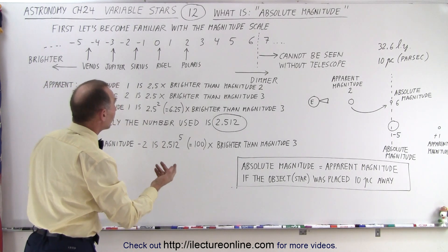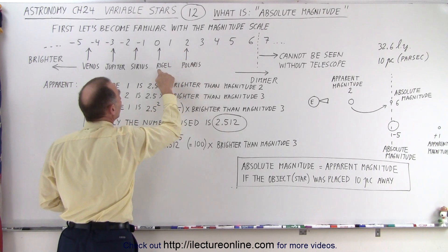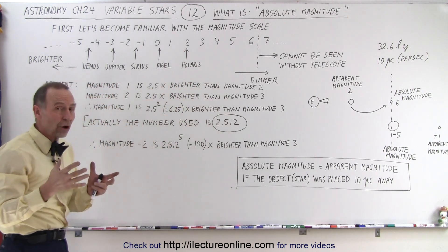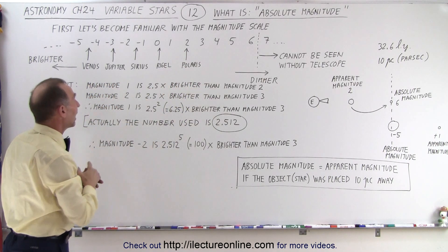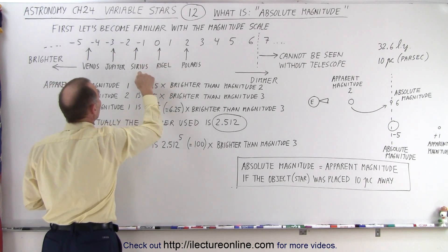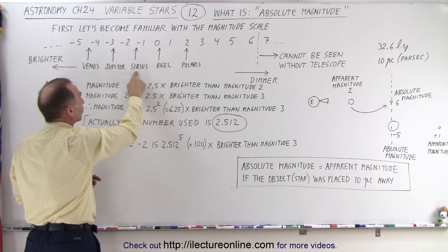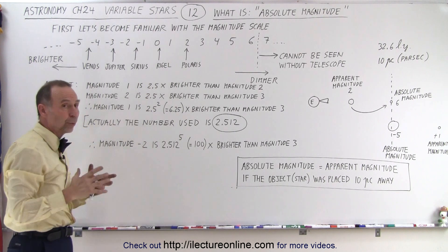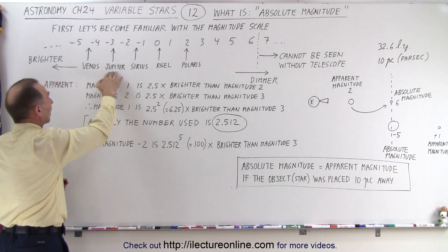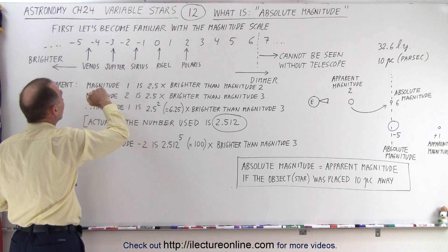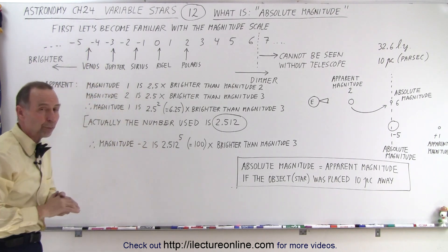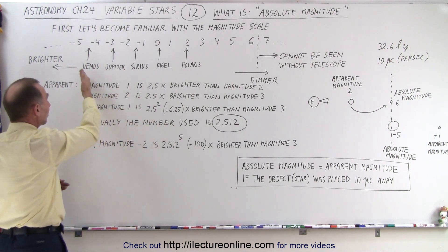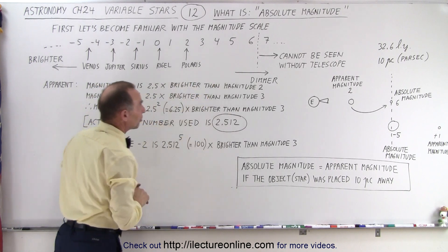Some examples: Polaris has a magnitude of about two. Rigel, which is the brightest star in the constellation Orion, has a magnitude of almost down to zero. Sirius, the brightest star in the sky, has a magnitude of about minus 1.4. Jupiter at its brightest is about a minus 2.6 and Venus at its brightest is about a minus 4.5. So you can see that these are brighter objects and these are dimmer objects.